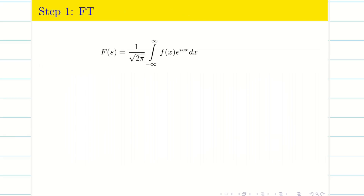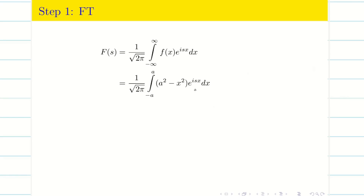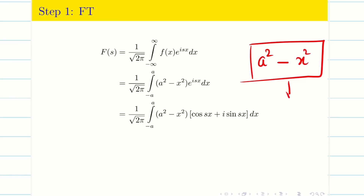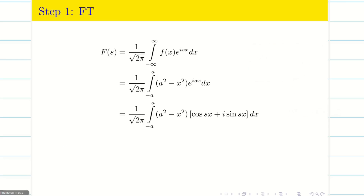Step 1: write the Fourier transform formula. f(x) = a² - x² on the interval -a to a. Rather than solving directly, we use the expansion: e^(isx) = cos(sx) + i·sin(sx). Note that a² is a constant and is an even function, x² is also an even function, so a² - x² is an even function.